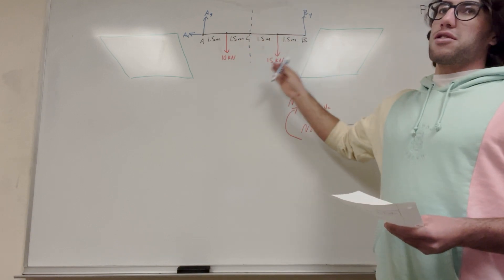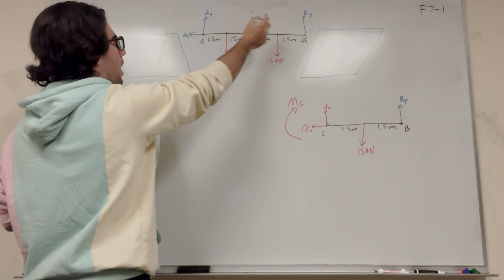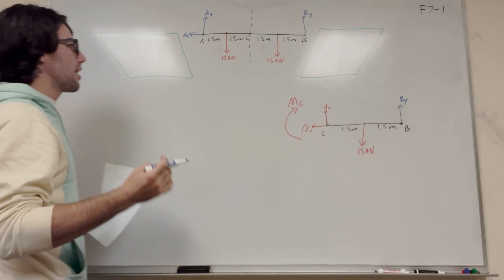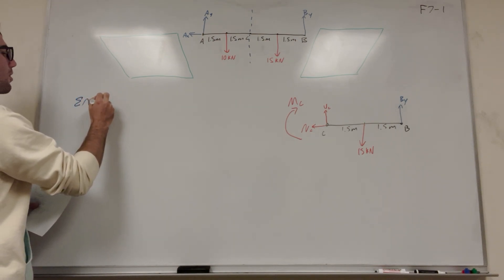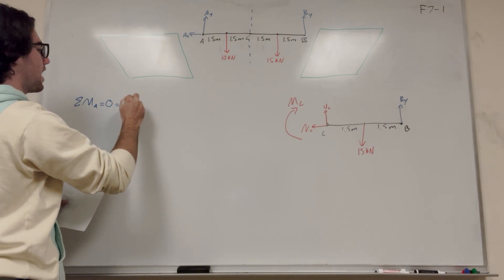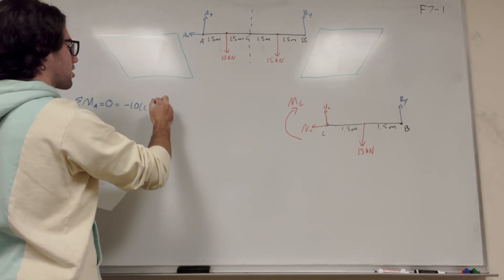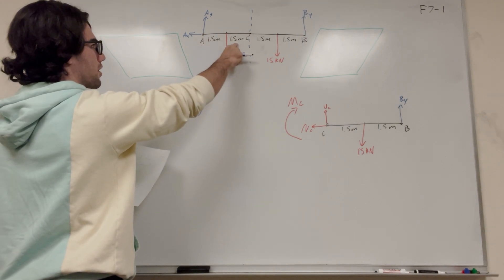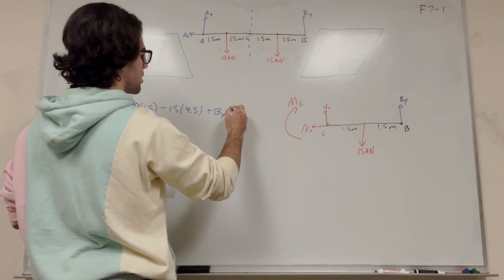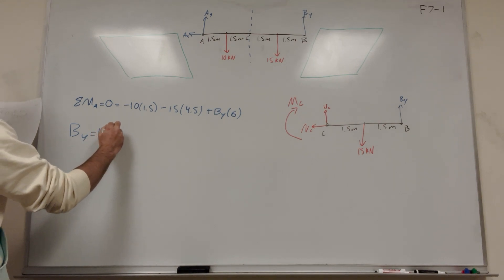To find B_y, we go back to the original free body diagram. We take moments about A to eliminate A_y, leaving only B_y. The 10 kN force acts clockwise at 1.5 m, so it's −10 × 1.5. The 15 kN force also acts clockwise at 4.5 m, so −15 × 4.5. B_y acts counterclockwise at 6 m, so +B_y × 6 = 0. Solving, B_y = 13.75 kN.